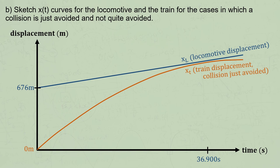The train starts with a higher speed than the locomotive and decelerates, reaching the same speed and almost the same displacement as the locomotive at t equals 36.9 seconds. It will then continue to decelerate until it stops, which is represented on this graph as a flat line.